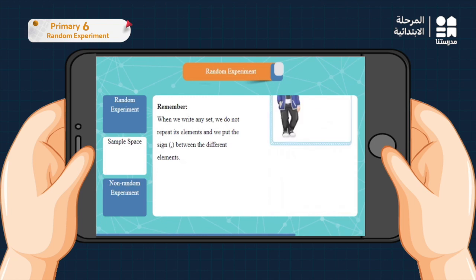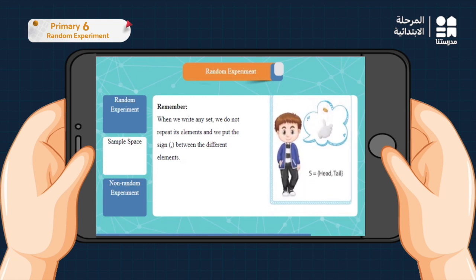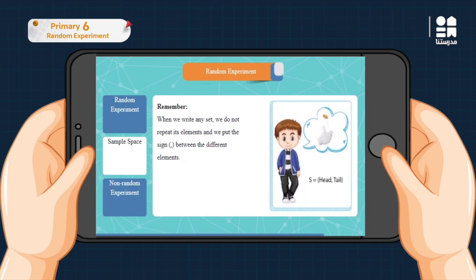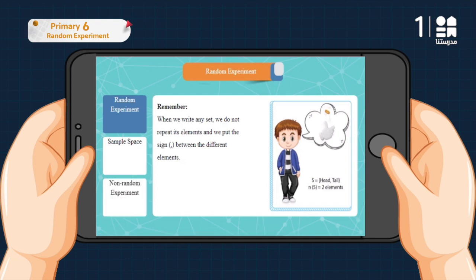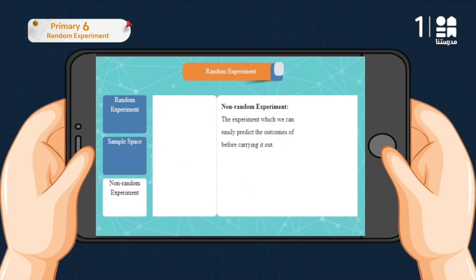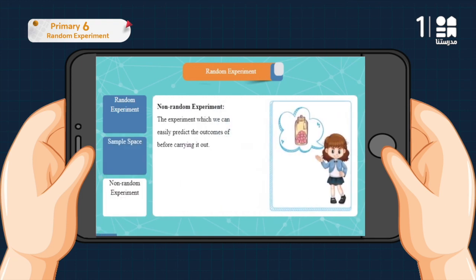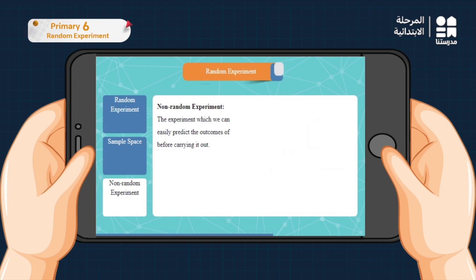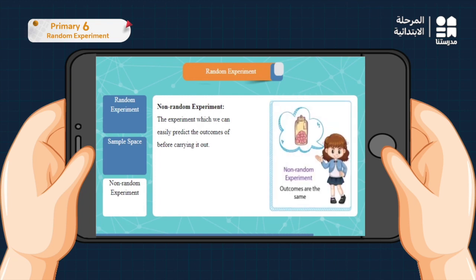Another example: when you toss a coin, the sample space is the set of the two faces — head or tail — and n(S) = 2. A non-random experiment is one in which we can predict the outcome exactly, like predicting the color of a candy picked from a jar full of pink candies.